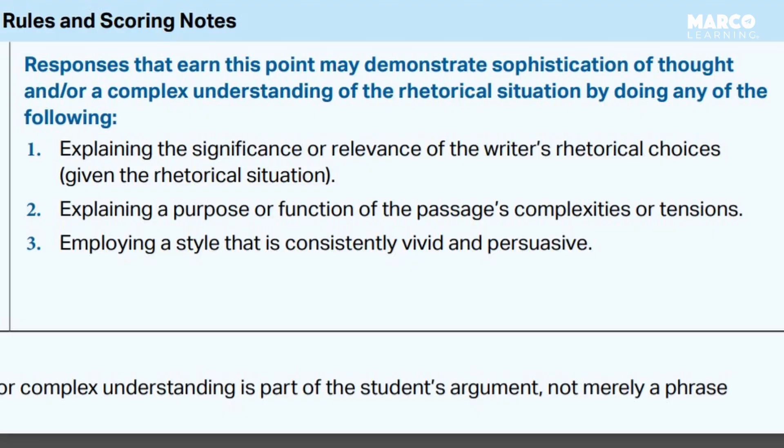The final way is by employing a style that's consistently vivid and persuasive — you need to write well. That's one way to earn the sophistication point: through beautiful prose. This is really hard to do. Remember, you've only got 45 minutes to write the essay and five minutes to submit it. You're typing on a word processor or handwriting your responses. It's really hard to get out of first-draft mode, and your readers are expecting this will be a first draft. So if your first draft is particularly vivid or persuasive and that's consistent throughout, that's one reason the reader can give you this point.